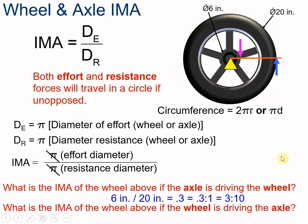What if it was the other way around — the wheel is the one driving the axle? Pause the video and calculate. This time you should have divided 20 inches by 6 inches. So 20 divided by 6 is 3.33, or a 3.33 to 1 ratio.